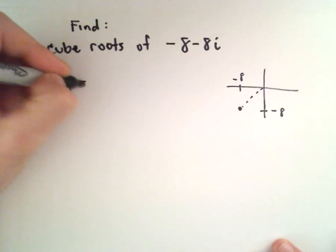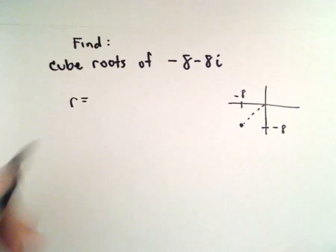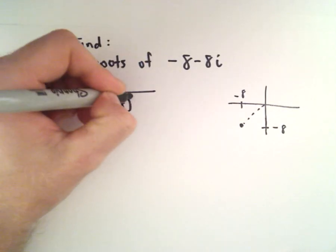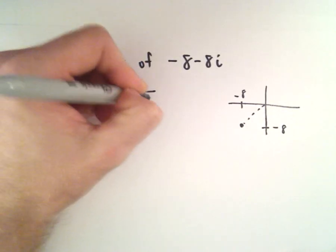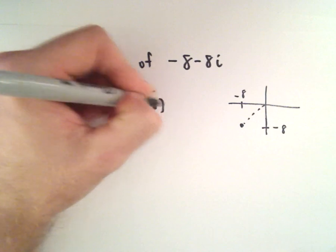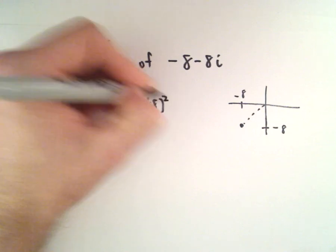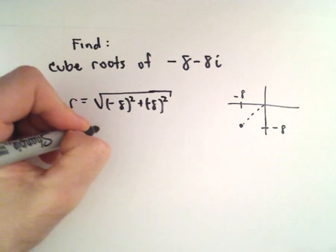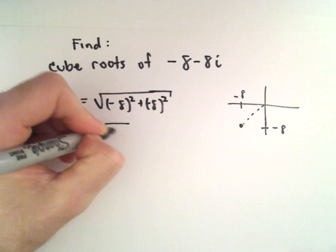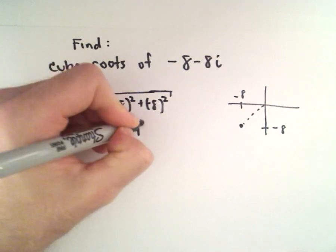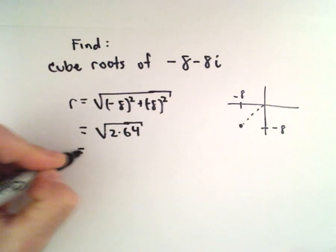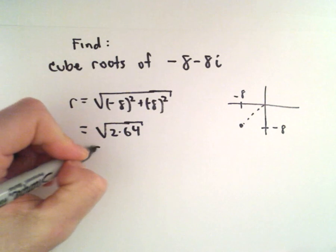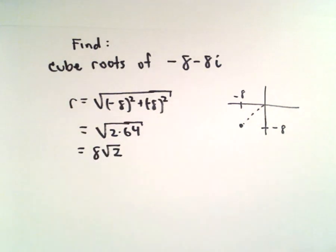We can find the r value, the modulus, by taking the square root of negative 8 squared plus negative 8 squared. So we'll have 64 plus 64, or 2 times 64. We can take the square root of 64 and just have 8 times root 2.